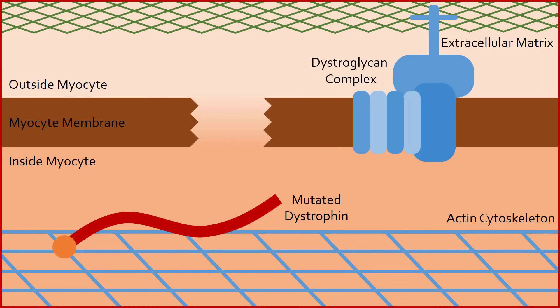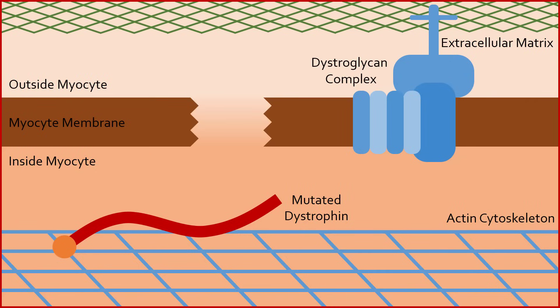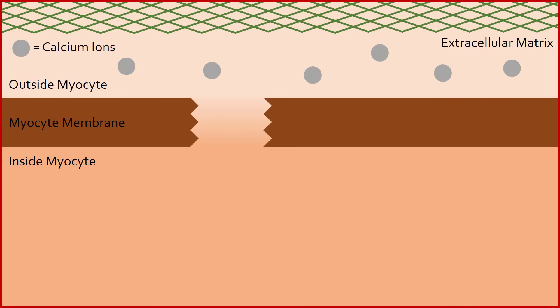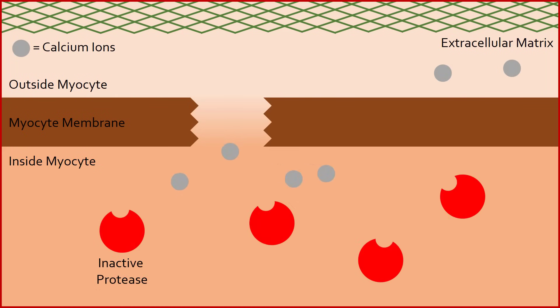These small rips allow diffusion of various molecules into and out of the myocyte. The most important substance involved in damaging muscle is calcium. Calcium ions, found plentifully outside of the myocyte, flow in through these small rips and activate calcium-dependent cellular enzymes that break down proteins, called proteases.